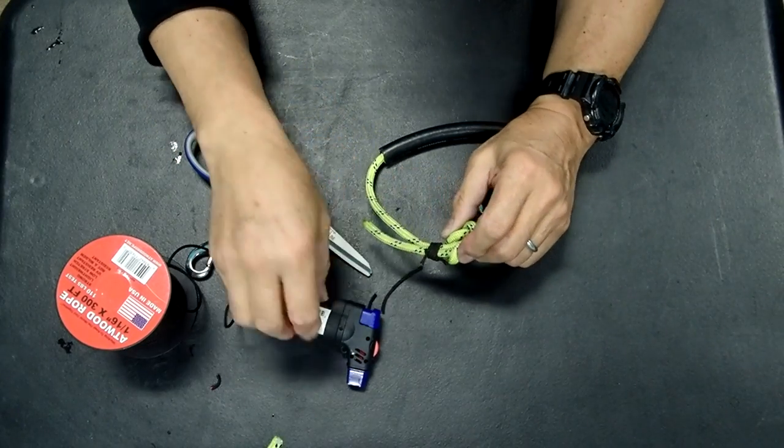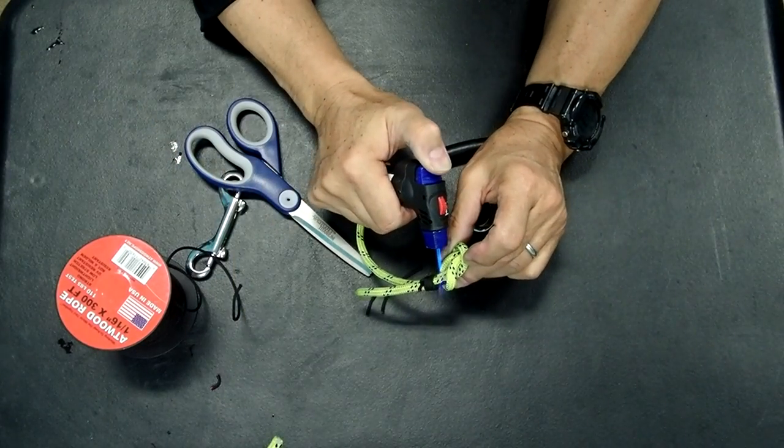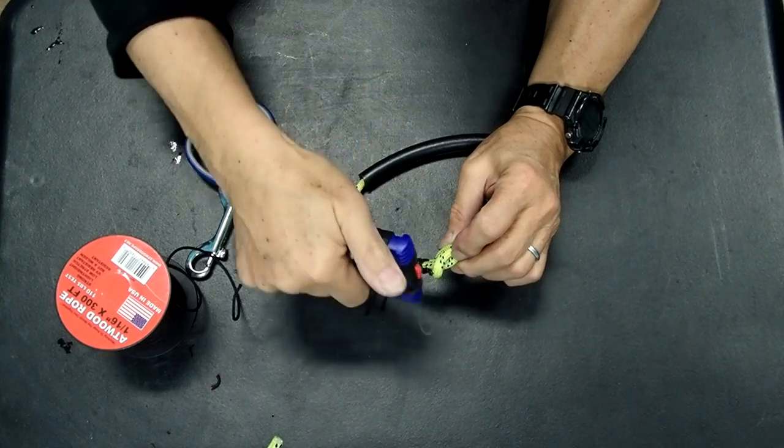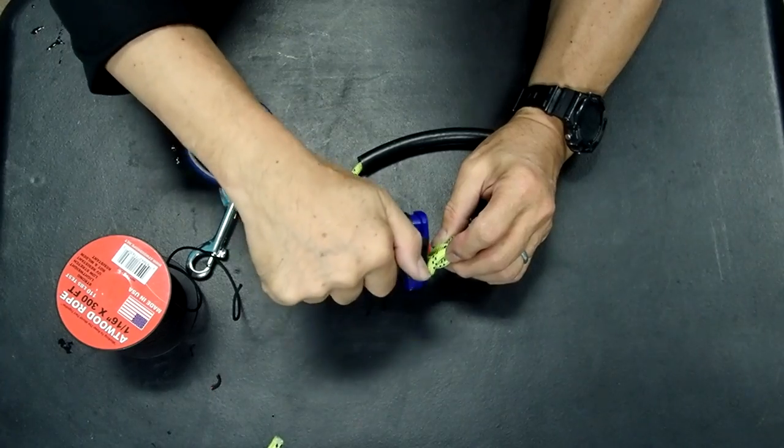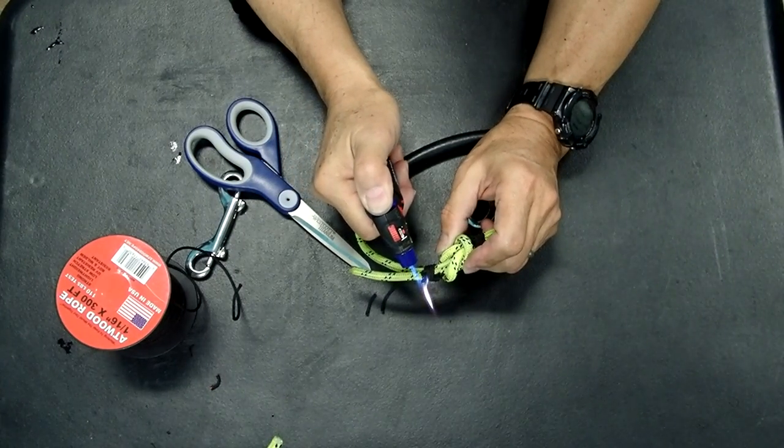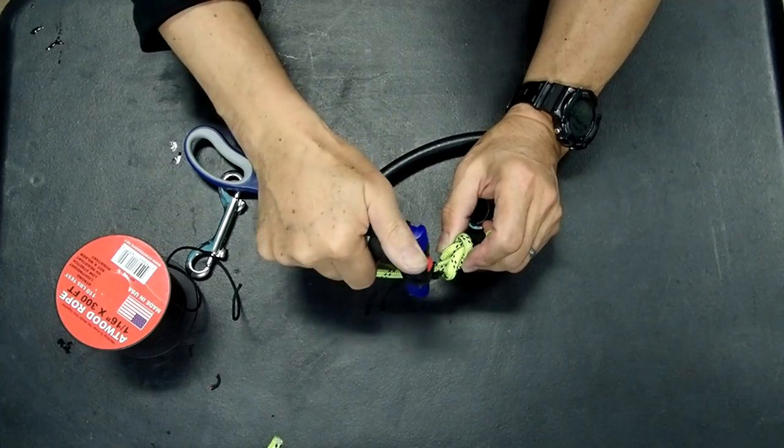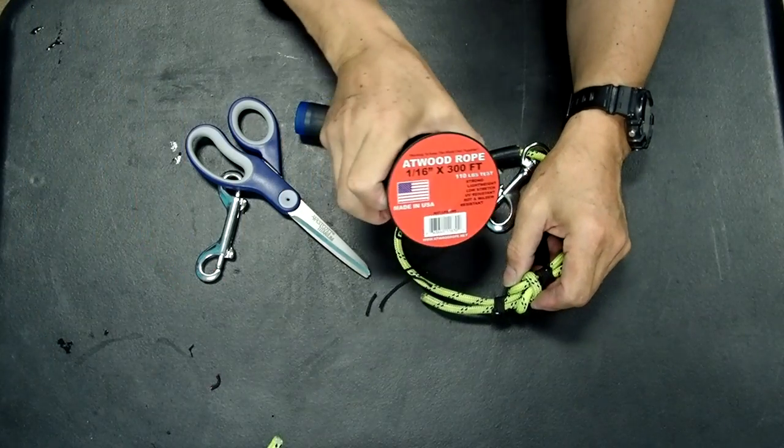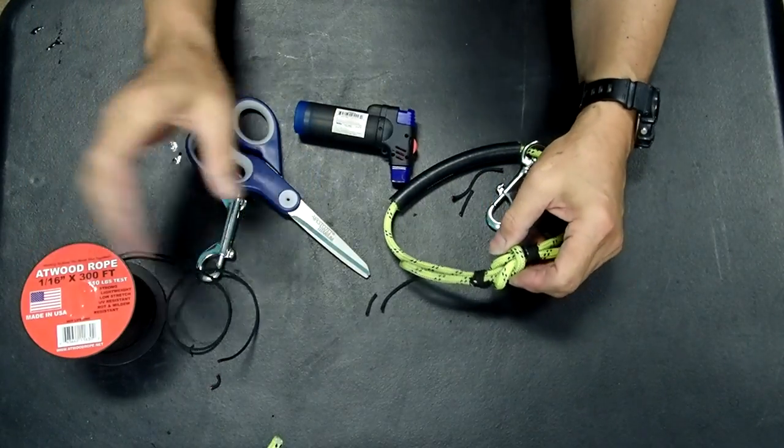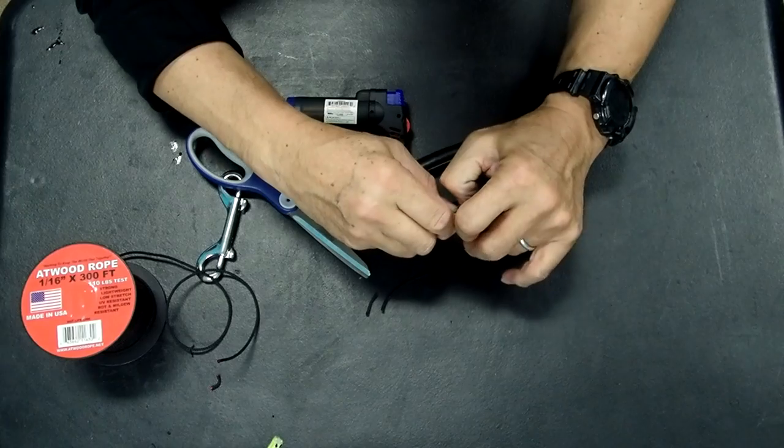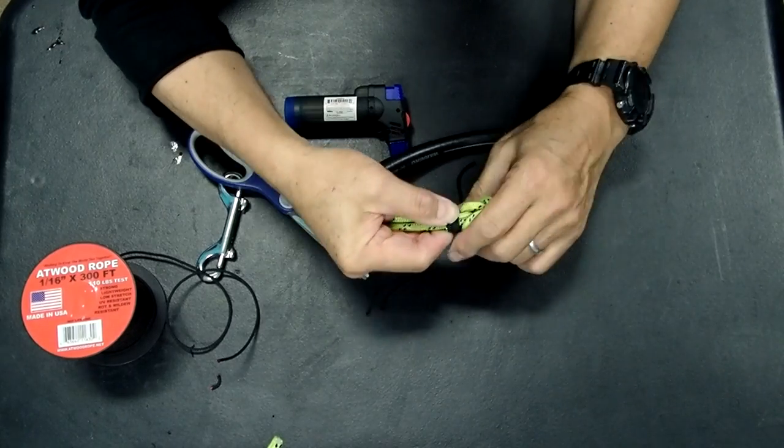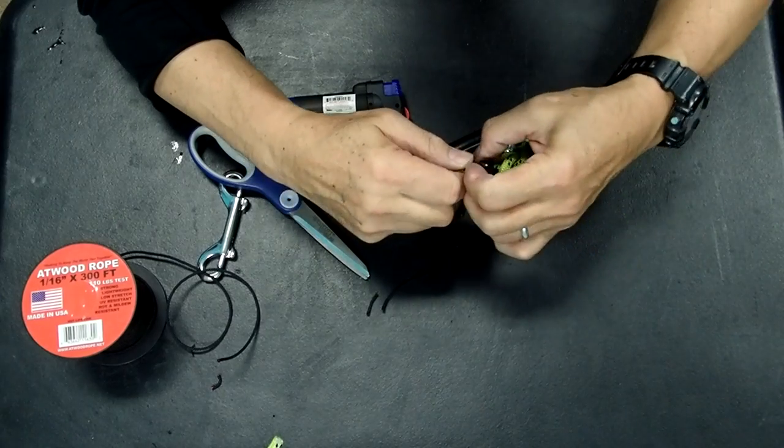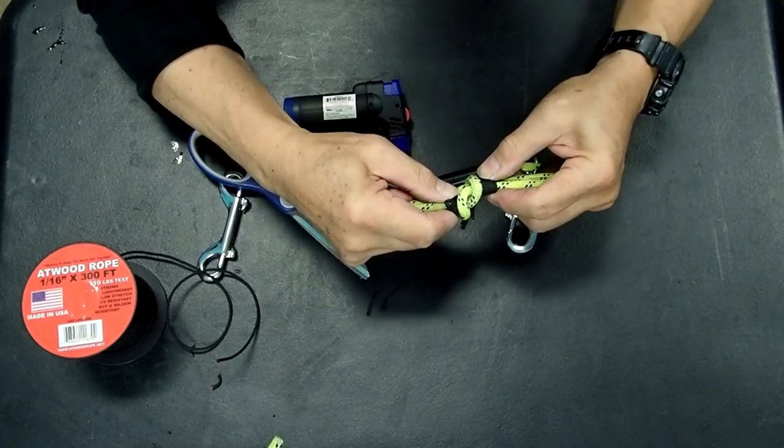Cut off the extra. And then again burn it. That stuff burns really well. I'm sure there are different makes. I really like this Atwood rope. Not a paid commercial. Okay, and then we're going to slide this down here again. Make that tight.